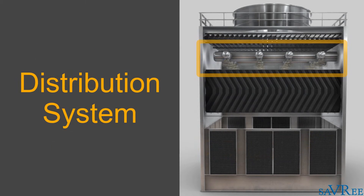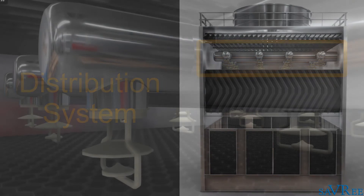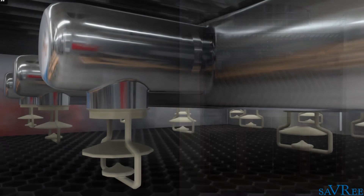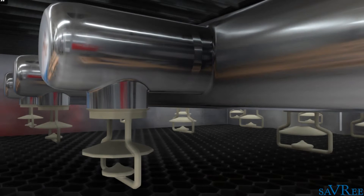Distribution system. The distribution system is the portion of a cooling tower that distributes water over the heat exchanger. Spray nozzles form part of the distribution system.